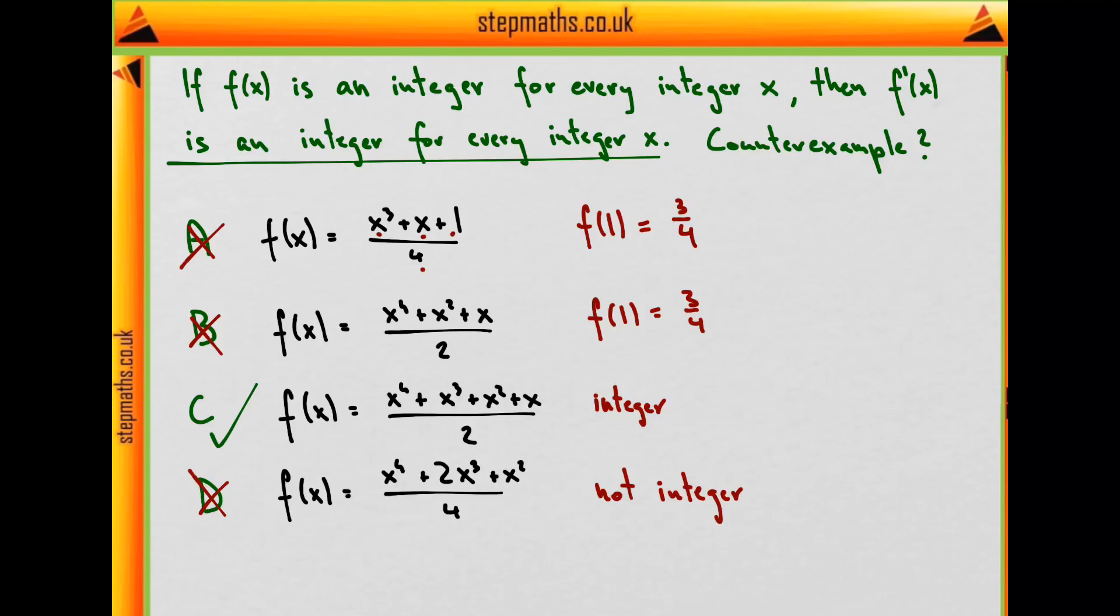We can double check by differentiating that function. Here it is differentiated, and we can see that it already fails for x = 2. We're going to get integers from here, because they're all even numbers, plus 1/2. So this function f(x) shows us that even though a function has an integer value for every integer x, it need not always be the case, and it isn't for this function, that the derivative does the same. This is a valid counterexample.